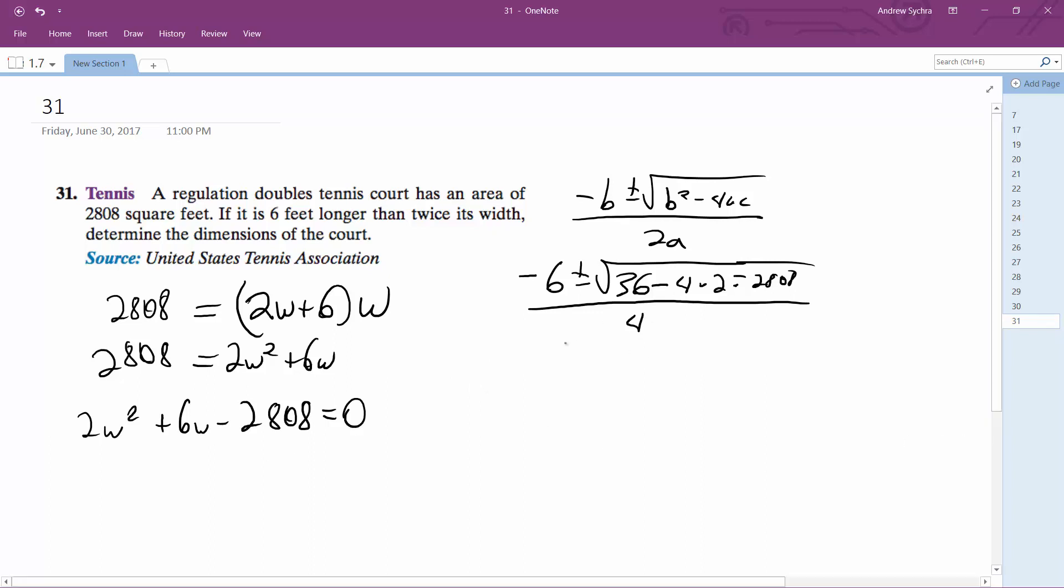Taking the positive value: negative 6 plus square root of 36... gives us 150. So negative 6 plus 150 divided by 4 gives us 36, which equals w.